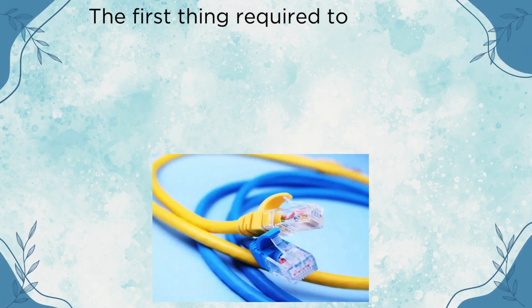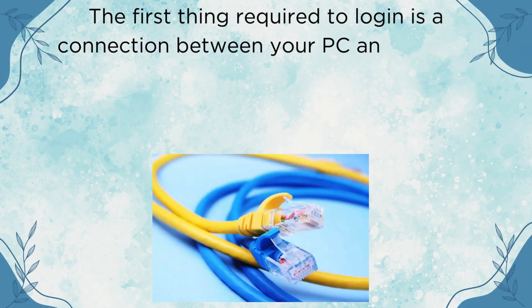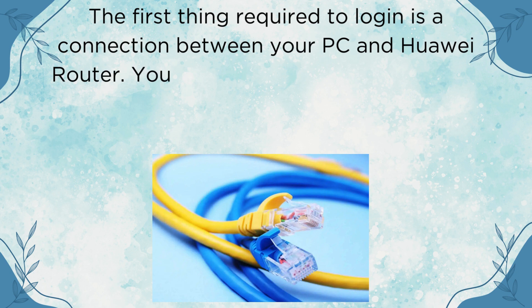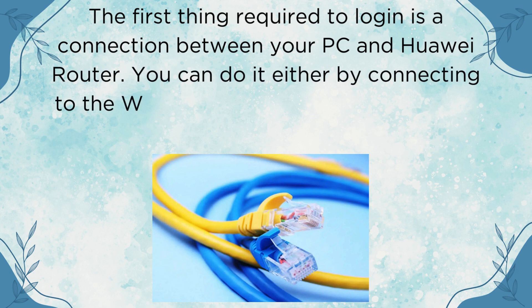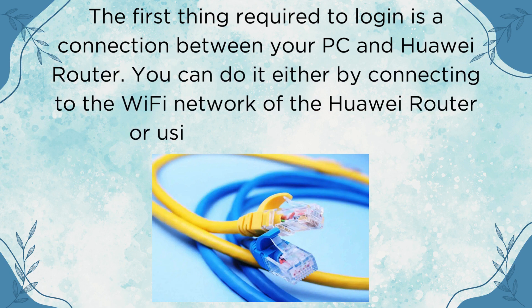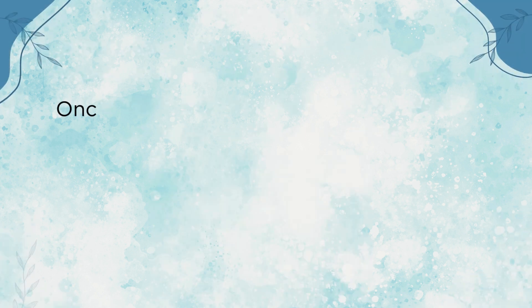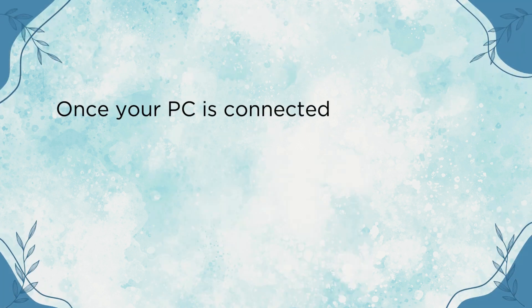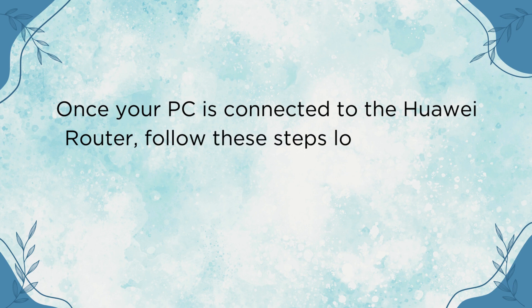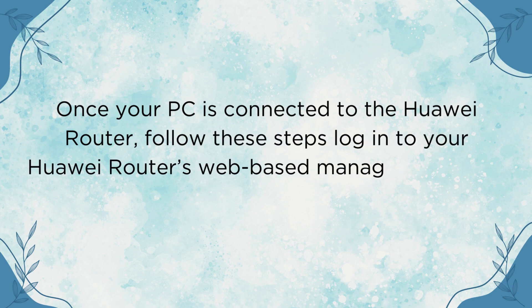The first thing required to log in is a connection between your PC and Huawei router. You can do it either by connecting to the Wi-Fi network of the Huawei router or using an Ethernet cable. Once your PC is connected to the Huawei router, follow these steps to log in to your Huawei Router's web-based management page.